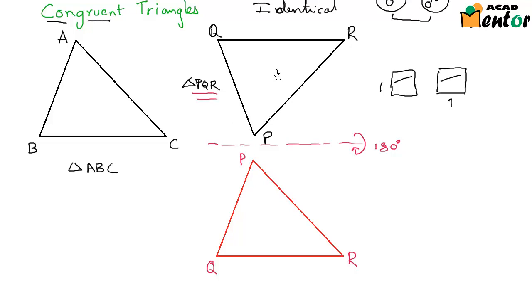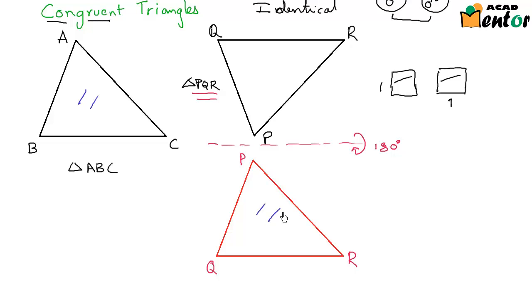I have not changed any angles or the measure of sides — I have just rotated it along this particular axis to get this figure of triangle PQR. Now when we look carefully at triangle ABC and triangle PQR, they look absolutely identical.